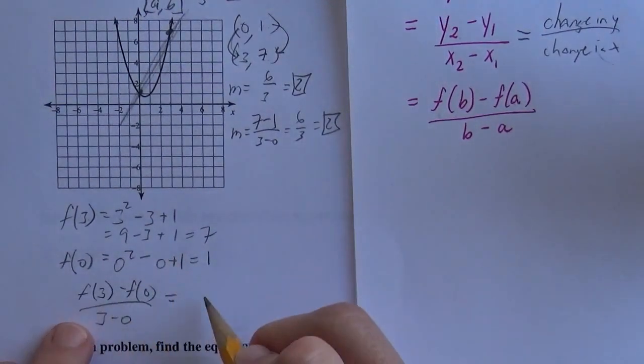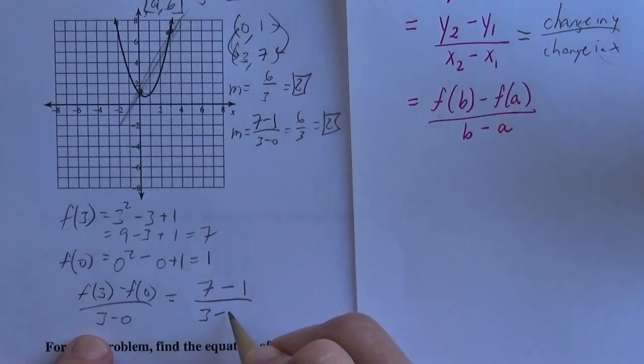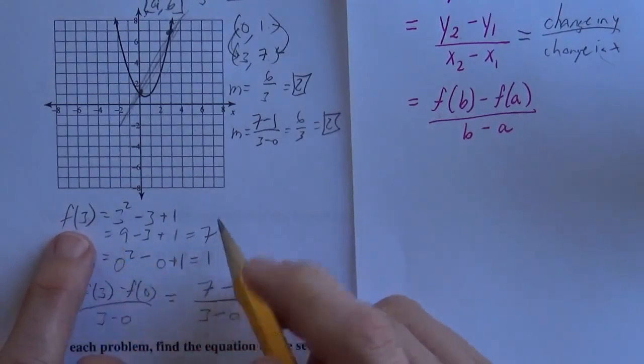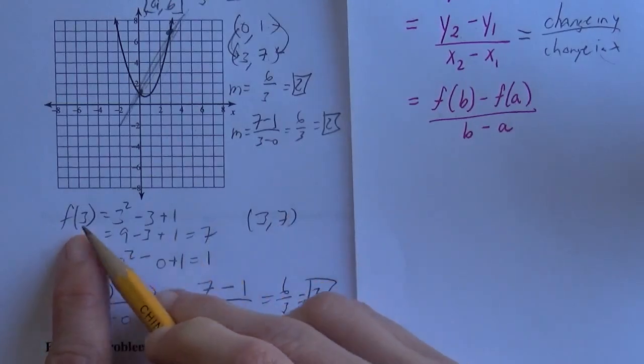Couldn't read that. And so that's 7 minus 1 over 3 minus 0 is 6 over 3 is 2, yet again. So that fancy notation just kind of stands for finding ordered pairs.